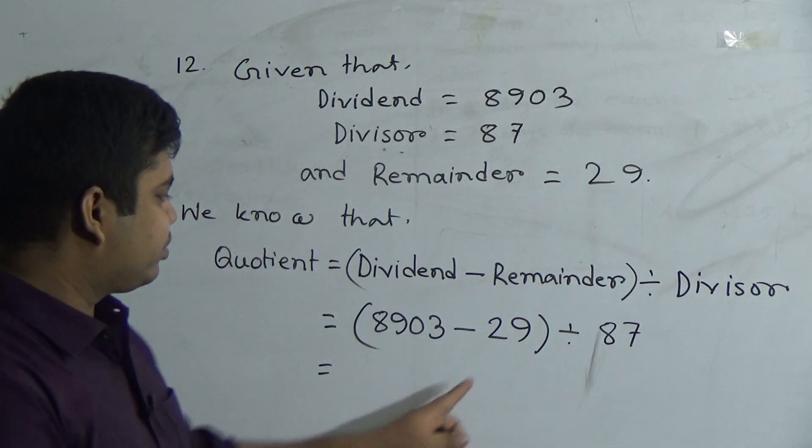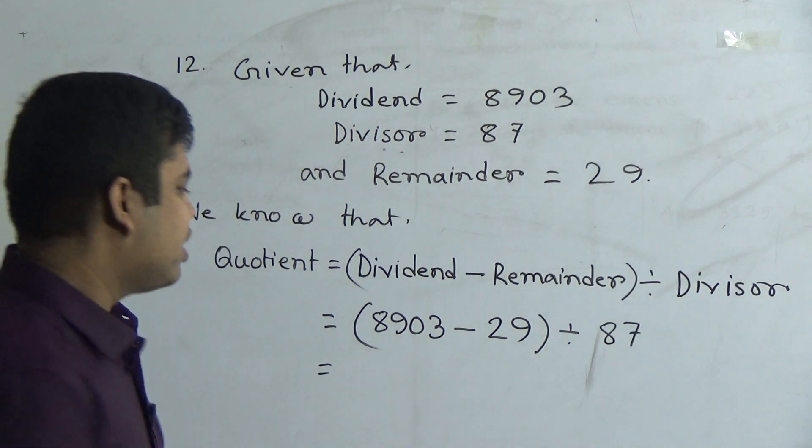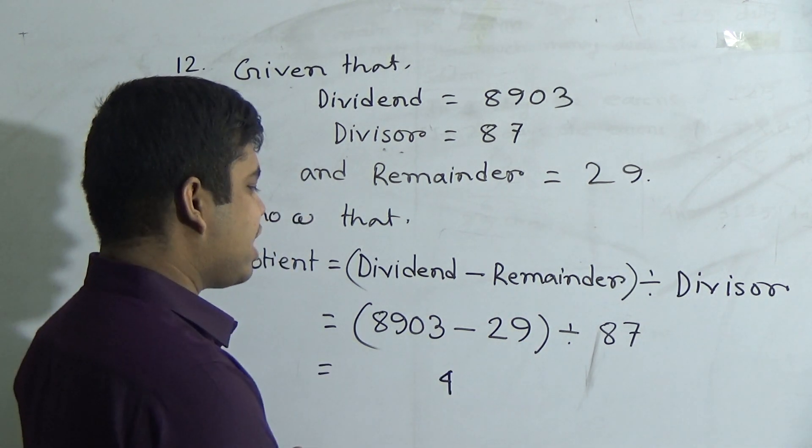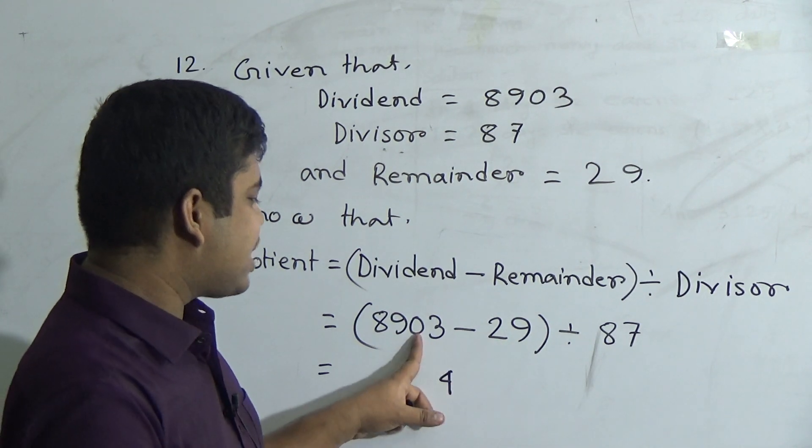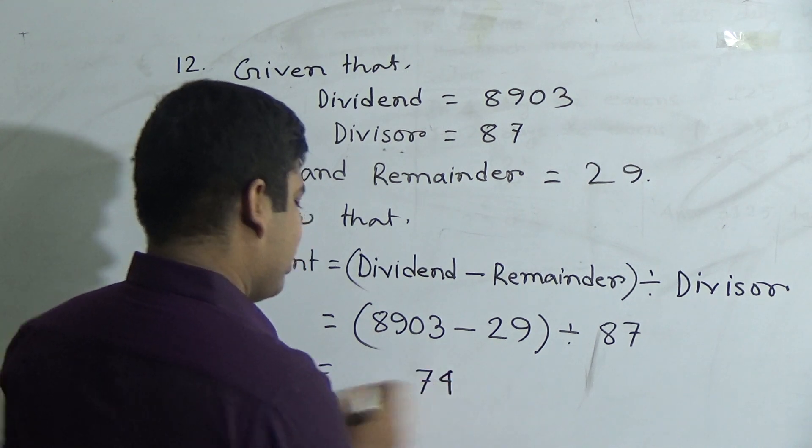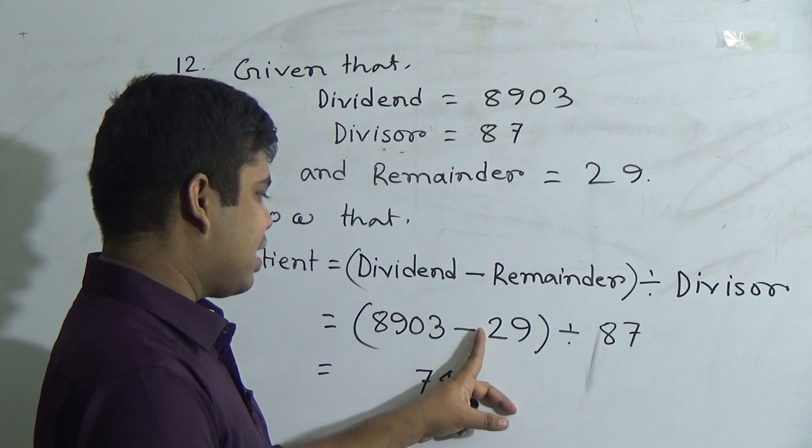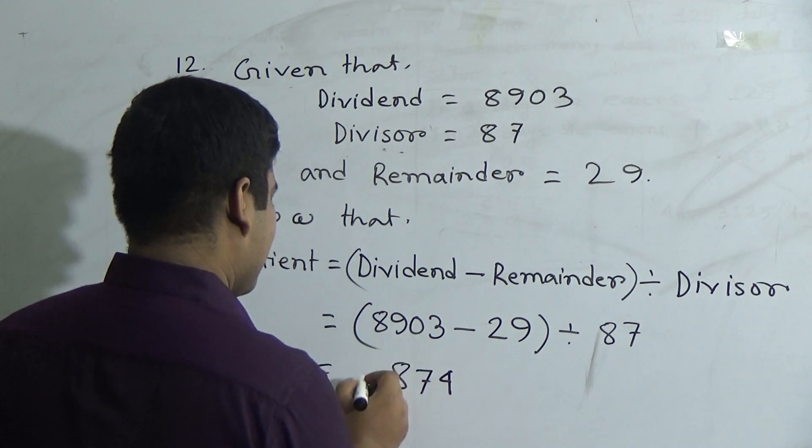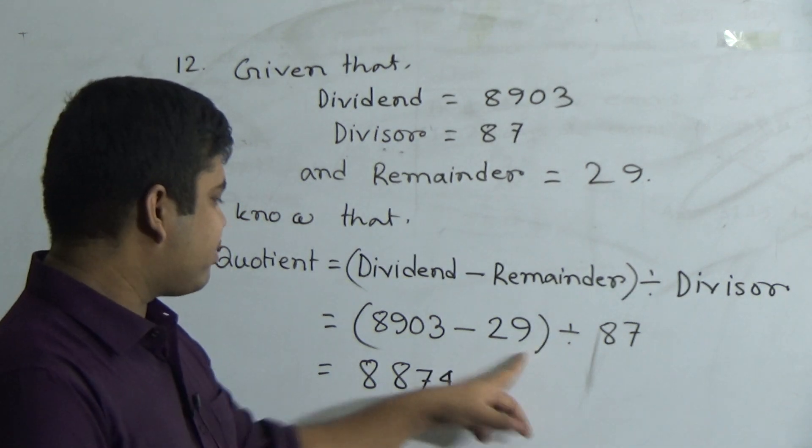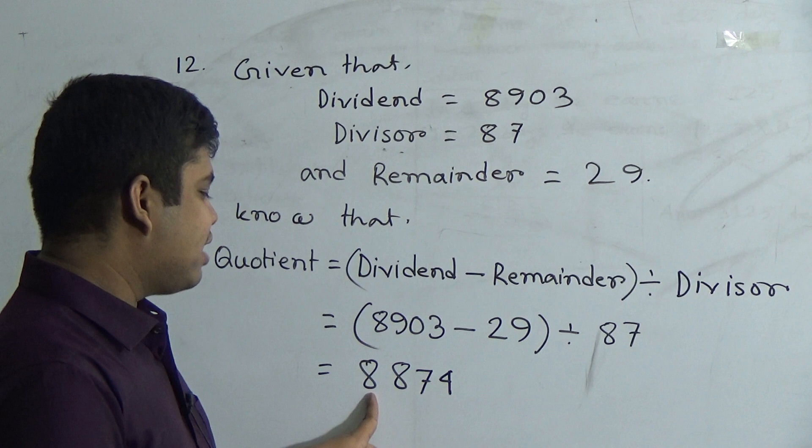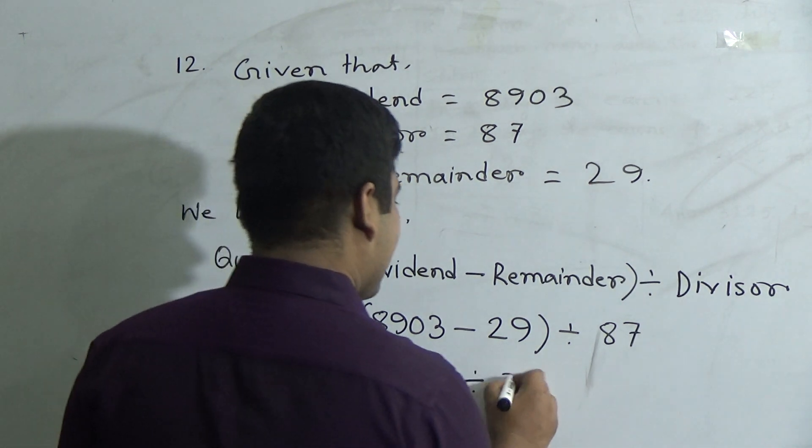Now, at first we do subtraction. Okay, 9 to 13, it will be 4, carrying 1. That 1 is added with this 2, it is 3. 3 to 10, we need 7, carrying 1. That 1 is added with this section and it will be 1. And 1 to 9, it needs 8. And 8 is placed there. So if we subtract 29 from 8903, we get 8874 divided by that 87.